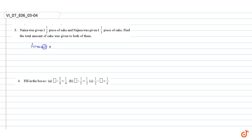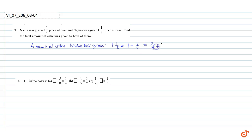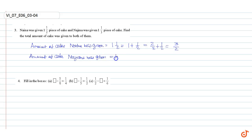Amount of cake Naina was given: one and a half equals one plus one by two, equal to two by two plus one by two, equal to three by two. Amount of cake Najma was given: one and one by three equals one plus one by three, equal to three by three plus one by three, equal to four by three.